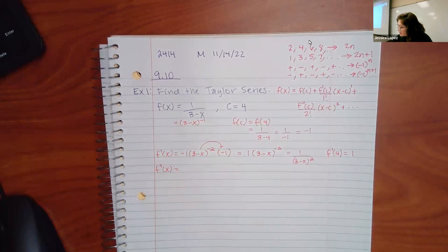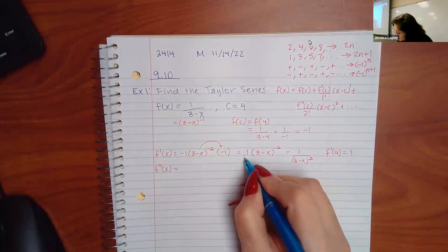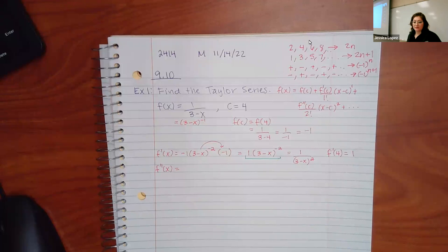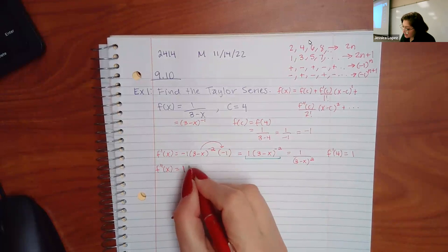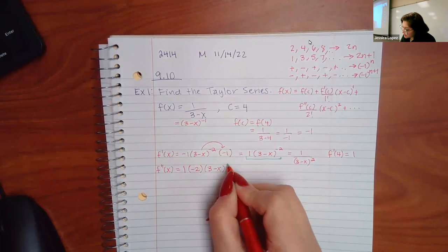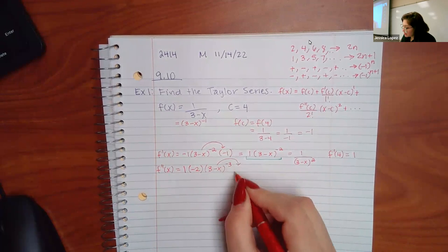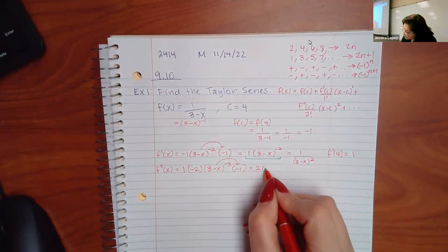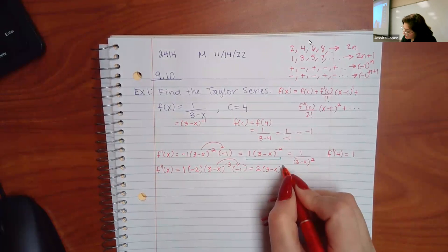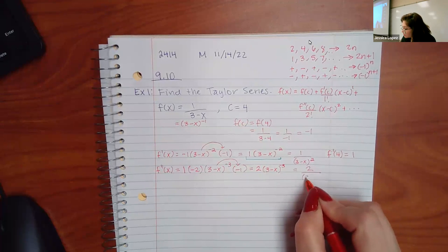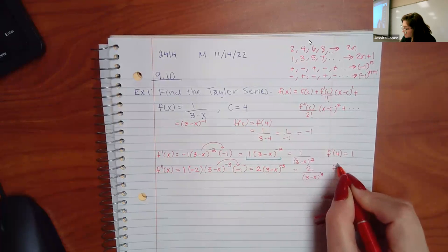For the second derivative, I always like to work with the exponent form rather than the fraction, to avoid the quotient rule. I keep the constant multiplier of 1, bring down the negative 2, decrease the power by 1 so it becomes negative 3, and multiply by the chain rule factor of negative 1. That gives positive 2 times (3−x)^(−3), or 2/(3−x)³.